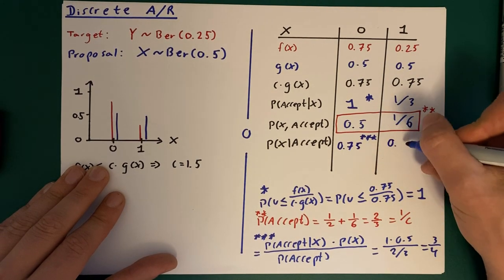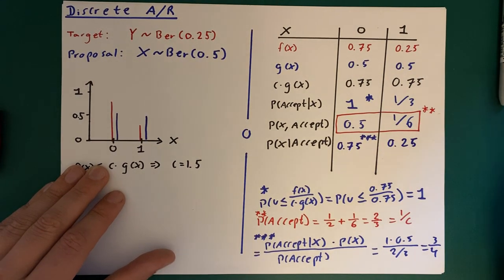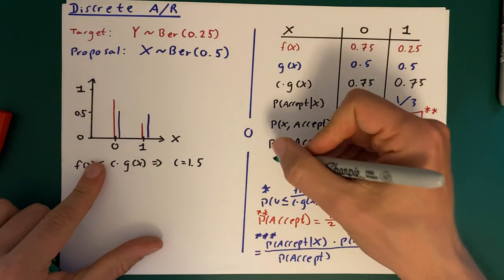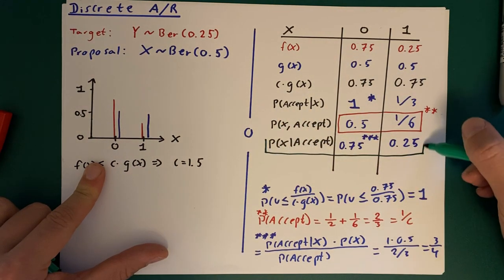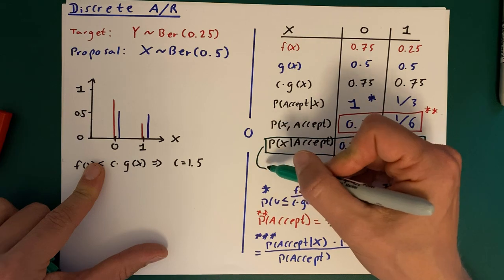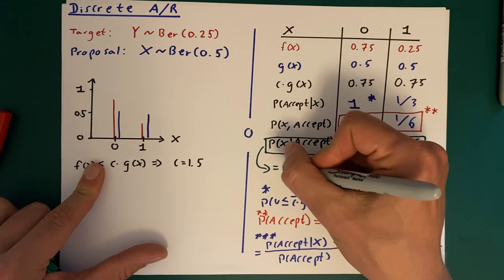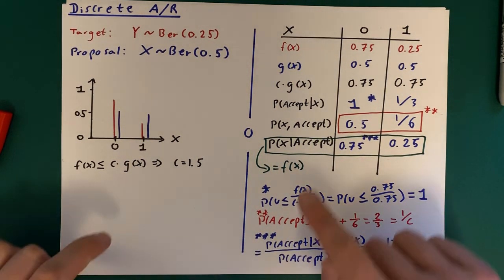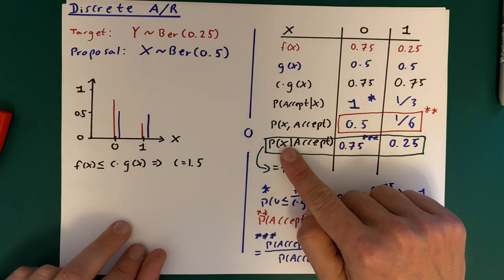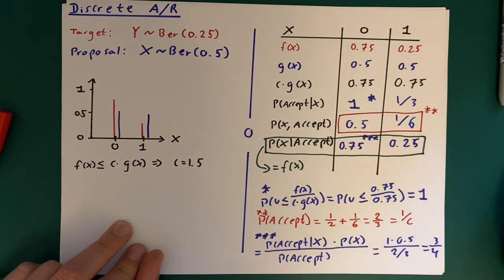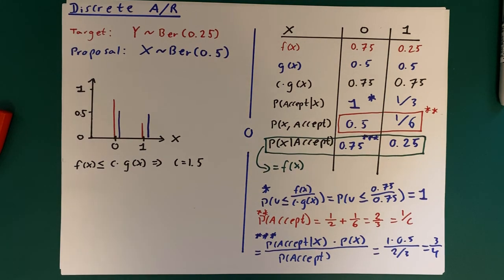And then very importantly, we'll just note that this row here is the same as f(x). So the probability of x taking a particular value conditional on us having accepted it is exactly the target distribution, and that was then us being able to simulate from the target distribution using a proposal distribution.